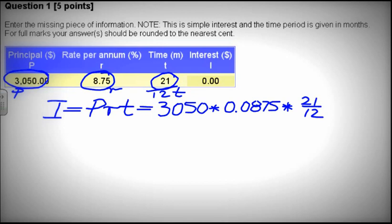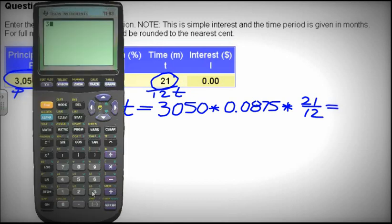That will give us 3050 times 0.0875 times 21 divided by 12. Enter.